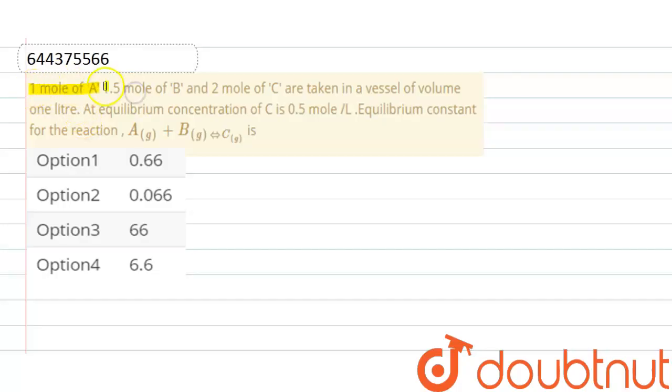Hello everyone. Here the question is: 1 mole of A, 1.5 mole of B, and 2 mole of C are taken in a vessel of volume 1 liter. At equilibrium, concentration of C is 0.5 mole per liter. Equilibrium constant for the reaction is?